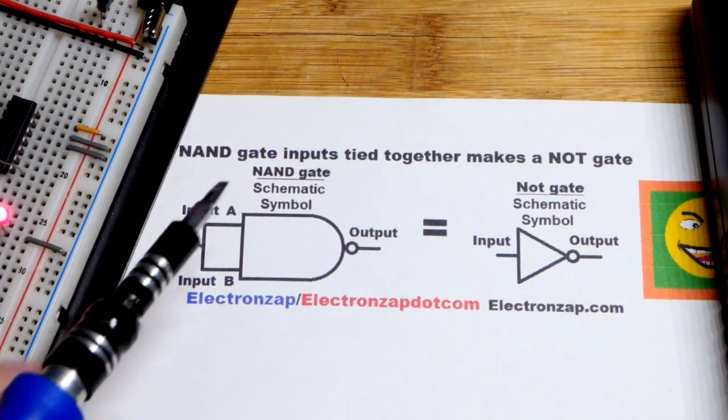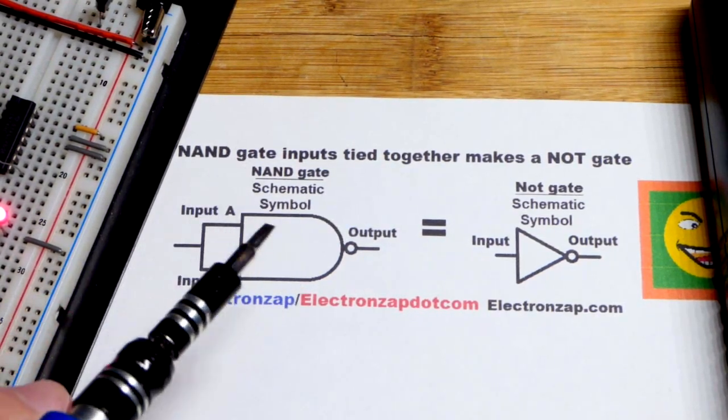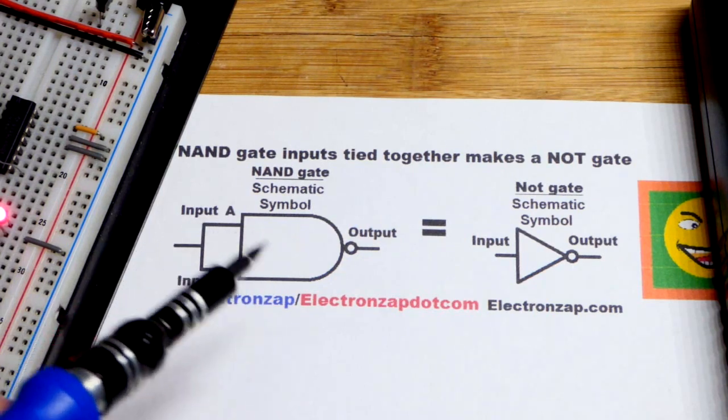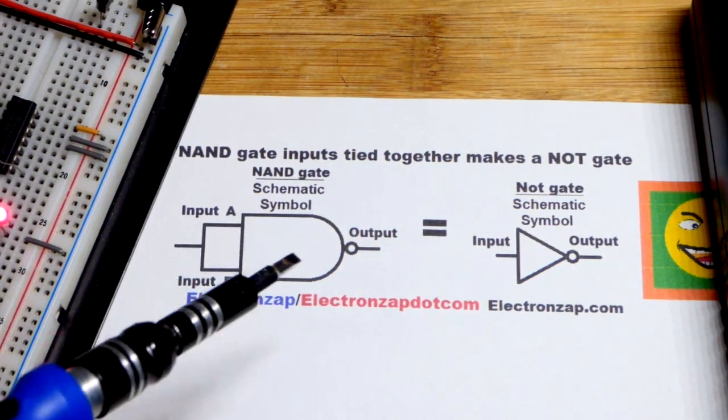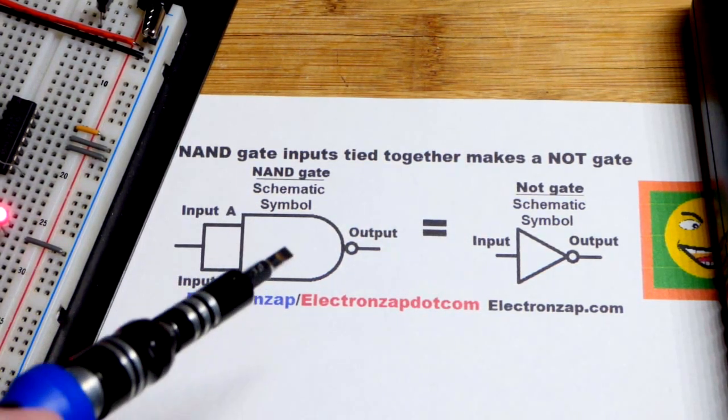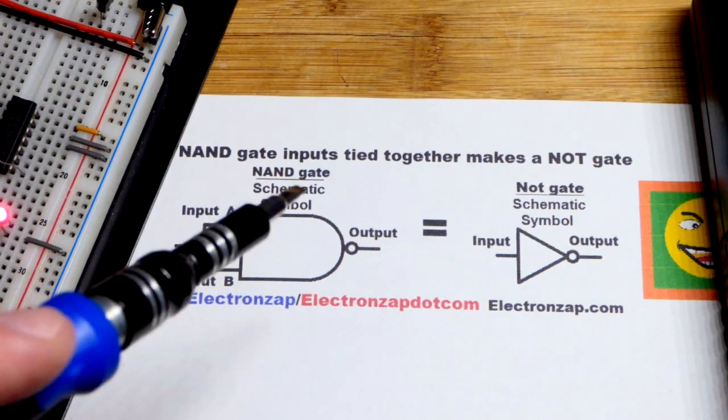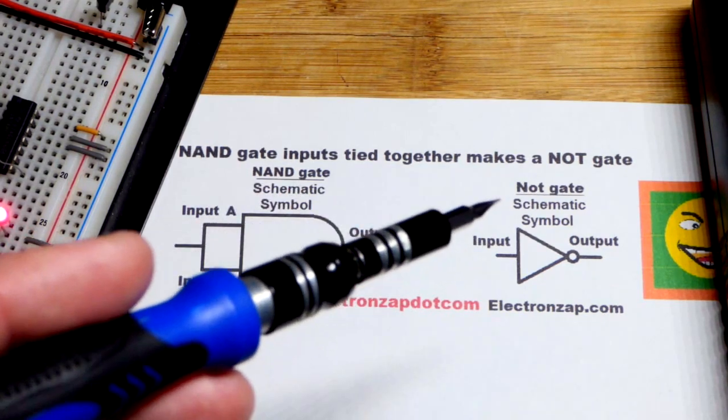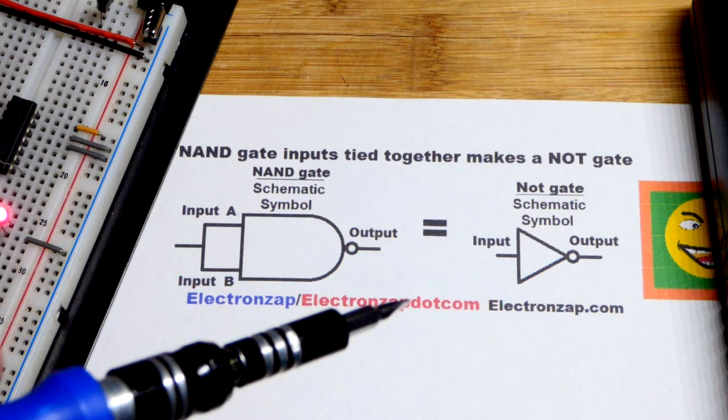The NAND gate is a universal logic gate. What that means is with the basic logic gates, you can make any of them if you have enough NAND gates. The NAND gate is the simplest one.